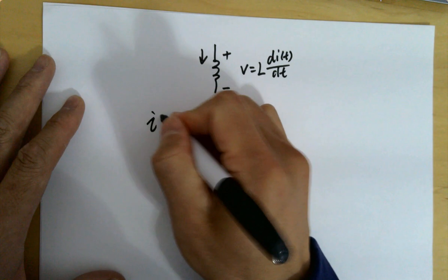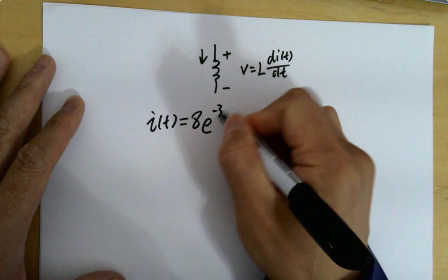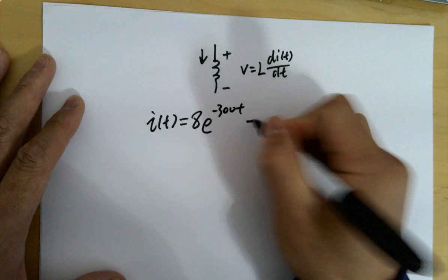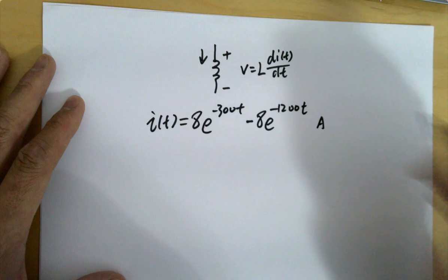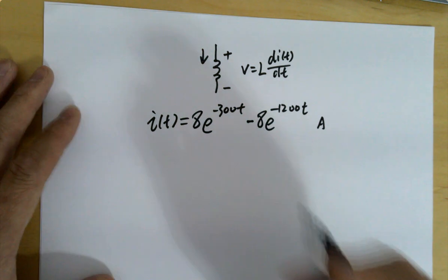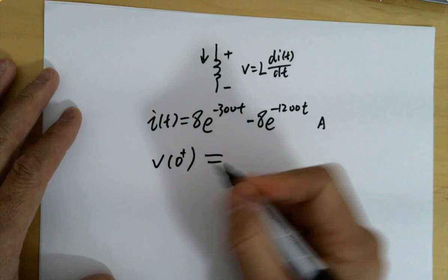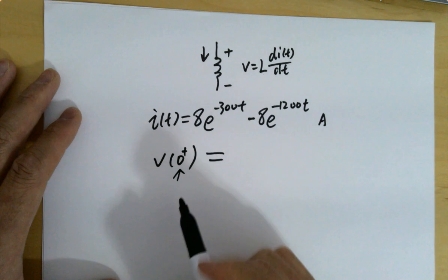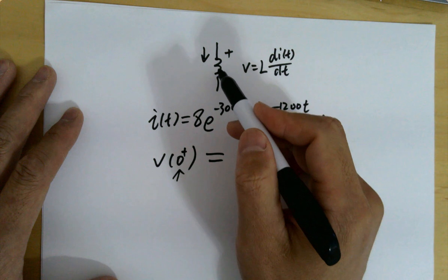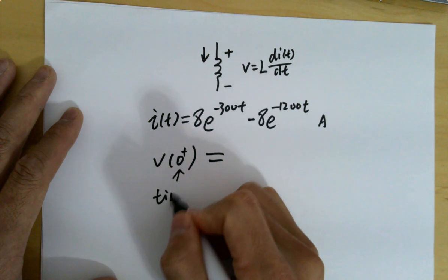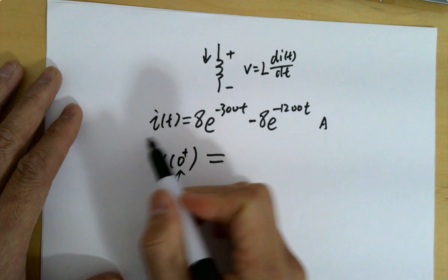For example, if you are dealing with this problem where i(t) = 8e^(−300t) − 8e^(−1200t) amps, the problem is asking for V(0+). Zero-plus means the moment the voltage or current is being injected into the inductor at time zero — just after you switch it on.